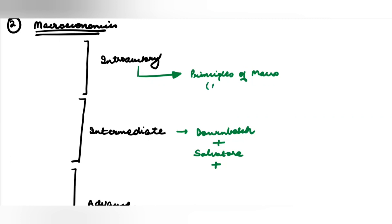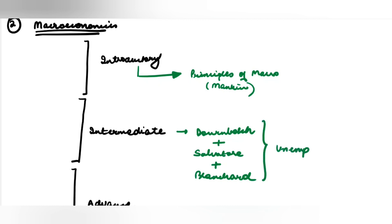For instance, Mankiw — some parts of it will also come into the intermediate section. It's a very well-written book, so you have to follow it well. Similarly, there's a book called Blanchard, which is also very good. You have to read relevant portions from it. For example, I don't like to do the unemployment chapter from Dornbusch — it's not that well-written. I prefer doing labor market and unemployment from other books as well. So that mix has to be maintained.